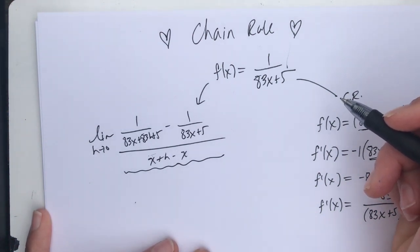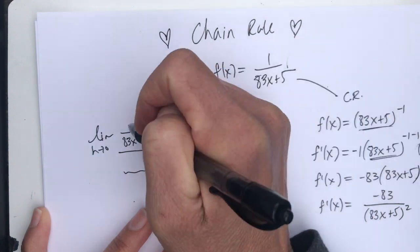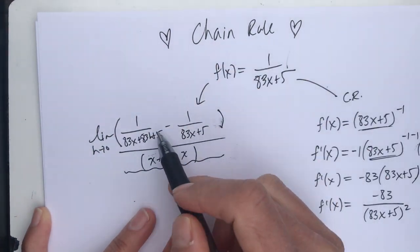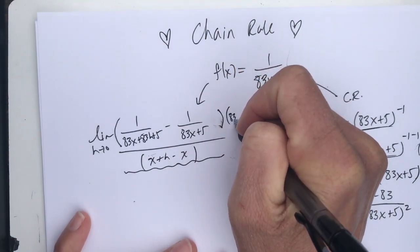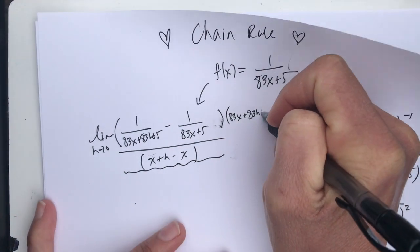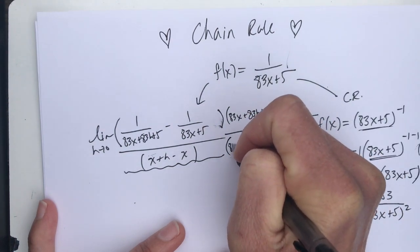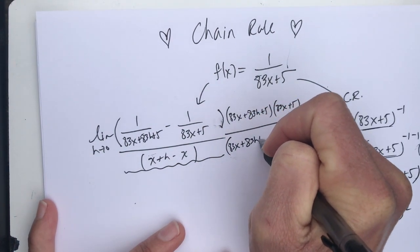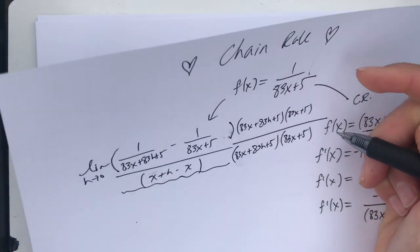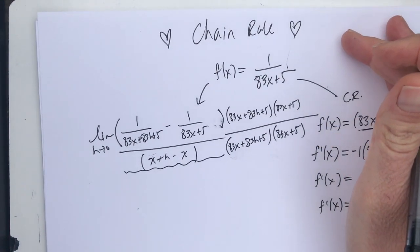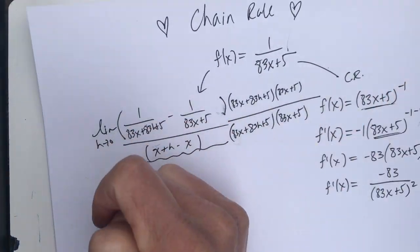In order to deal with this, I'm going to do a trick by multiplying this top part of the fraction and the bottom part of the fraction by these two nasty denominators. So what that looks like is I'm going to multiply by 83x plus 83h plus 5 and multiply by 83x plus 5, both the top and bottom. Now you're probably thinking that's crazy, but actually, when we do the algebra, this is going to be very cool. So patience and watch.